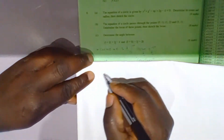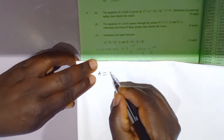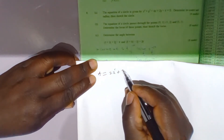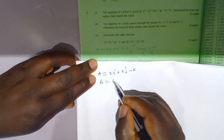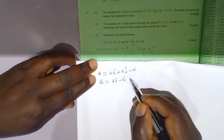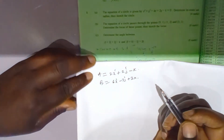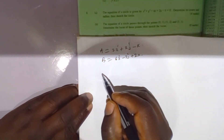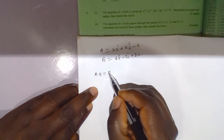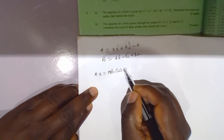Find the angle between a = 2i + 2j - k and b = 6i - 3j + 2k. We know that a dot b equals |a||b| cos theta.